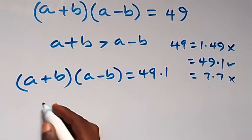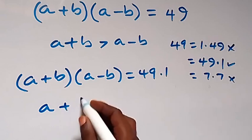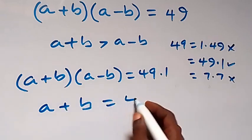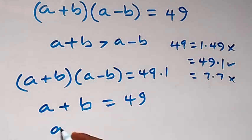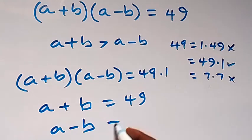That is here we have a plus b to be equals to 49. Then we have a minus b to be equals to 1.